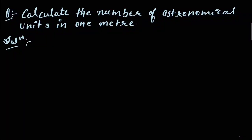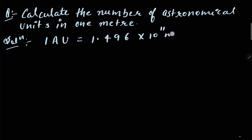Calculate the number of astronomical units in 1 meter. As we know, 1 astronomical unit is equal to 1.496 multiplied by 10 raised to the power 11 meters. So 1 meter will be equal to 1 divided by 1.496 multiplied by 10 raised to the power 11 astronomical units.